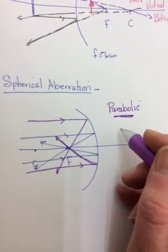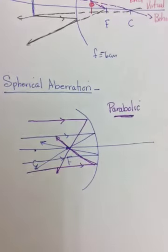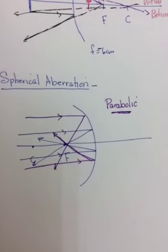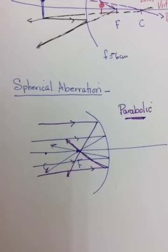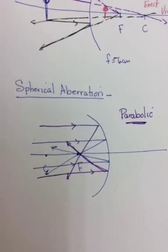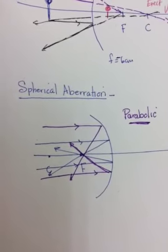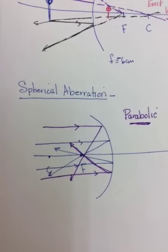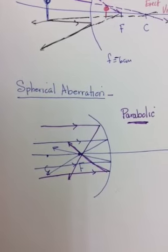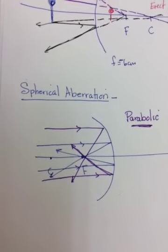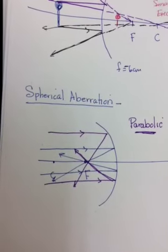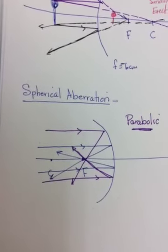And so because of that, we don't often have parabolic mirrors in school. But like the Hubble spacecraft and places like that would use parabolic mirrors to get rid of this spherical aberration. Speaking of the Hubble telescope, I'm assuming you've all heard of it.